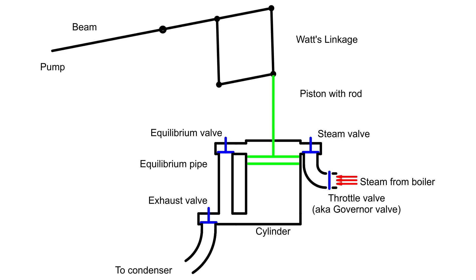I am going to explain the Cornish cycle using six schematic diagrams. In the first one, we see the relevant parts with the engine at rest. The piston is in top dead center because the weight of the pump rod pulls the pump end of the beam down. The piston end of the beam is connected via Watt's linkage to the end of the piston rod. Now, steam from the boiler is blocked by the throttle valve.